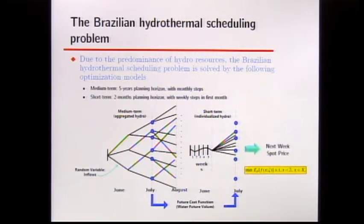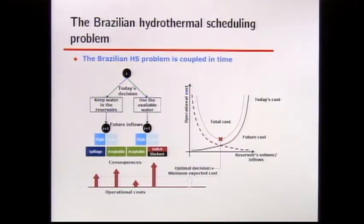The goal is to minimize the expected cost of power generation, subject to some physical constraints. The uncertainty also appears in the feasible set.